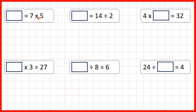So 7 times 5 is 35. Now, something equals 14 divided by 2. Again, all we have on this side of the equal sign is an answer box, and 14 divided by 2 is 7, because 7 times 2 is 14. So that's our answer.